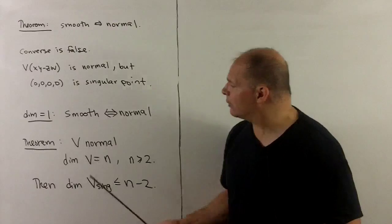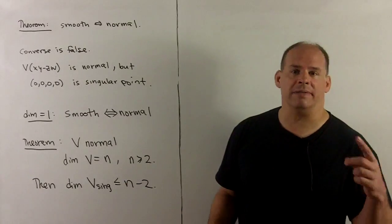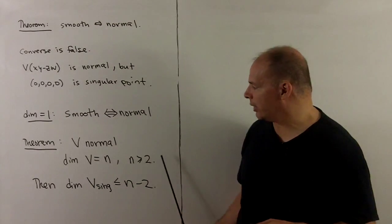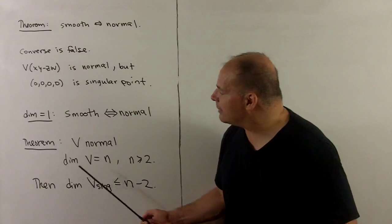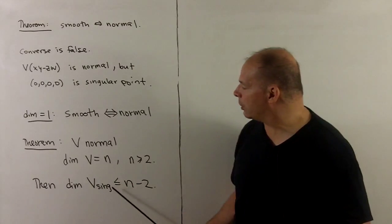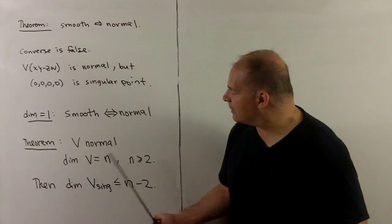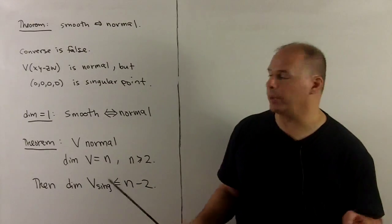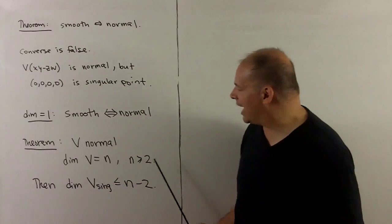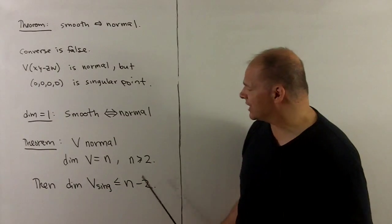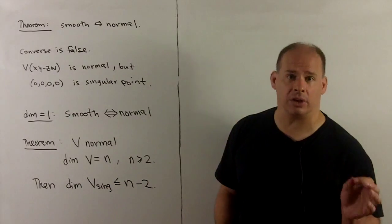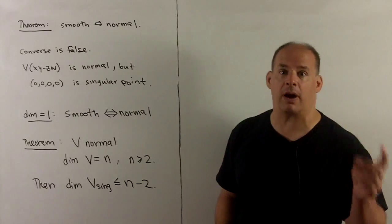Finally, theorem: if we have V normal, dimension of V equals n, n ≥ 2, then the dimension of the variety of singular points—remember that's an affine variety—that's dimension ≤ n - 2. Here we see that normal says there's a limitation on the size of the variety of singular points relative to the whole variety.